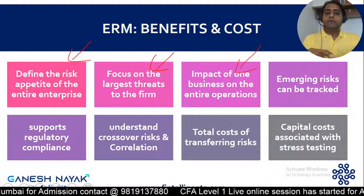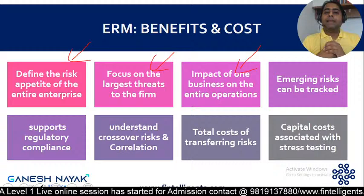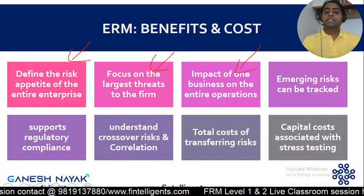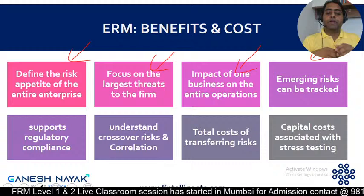Fourth benefit: emerging risks can be tracked. When I look at the entire risk view of the organization, I also try to focus on what new risks the organization might face in the future. For example, if I am planning to integrate automation into my business, the technology risk might increase in the future. Since we're doing changes to the business through ERM, we can focus on emerging risks that can grow and take steps beforehand for those kinds of risks.